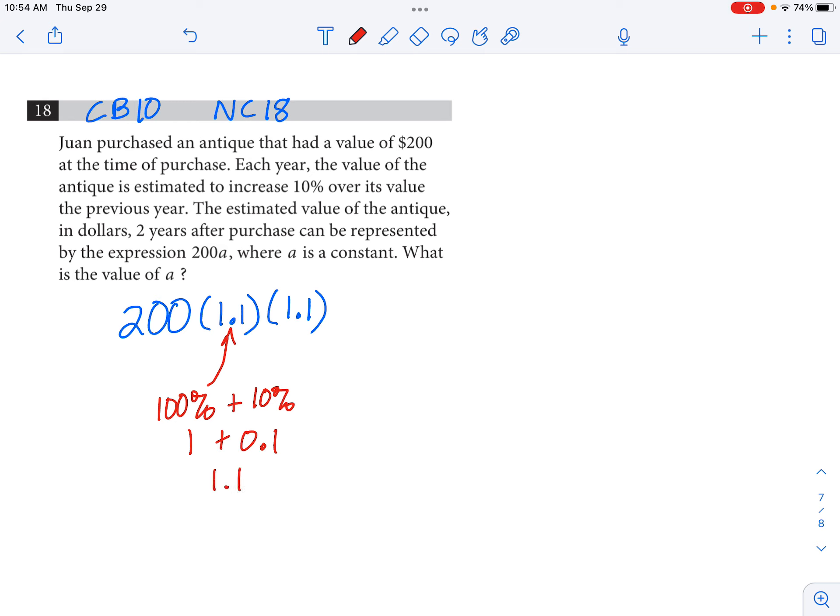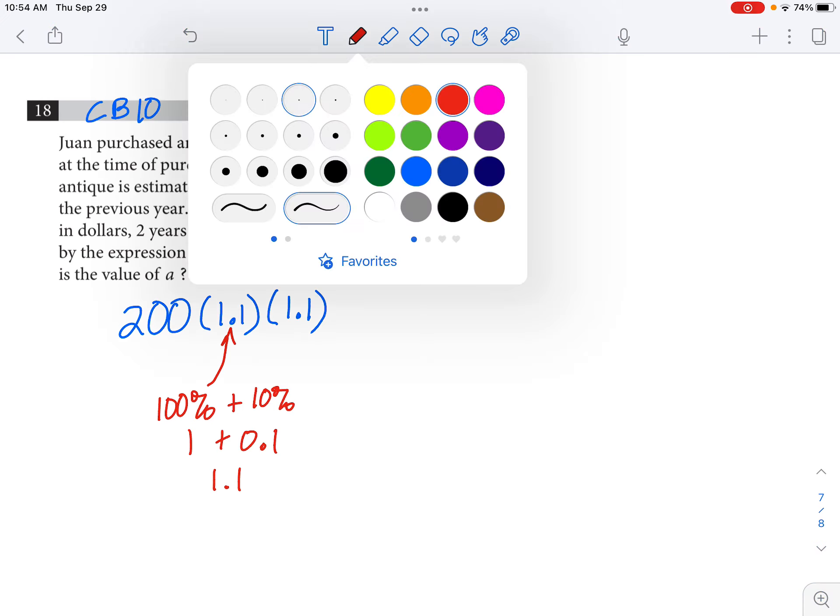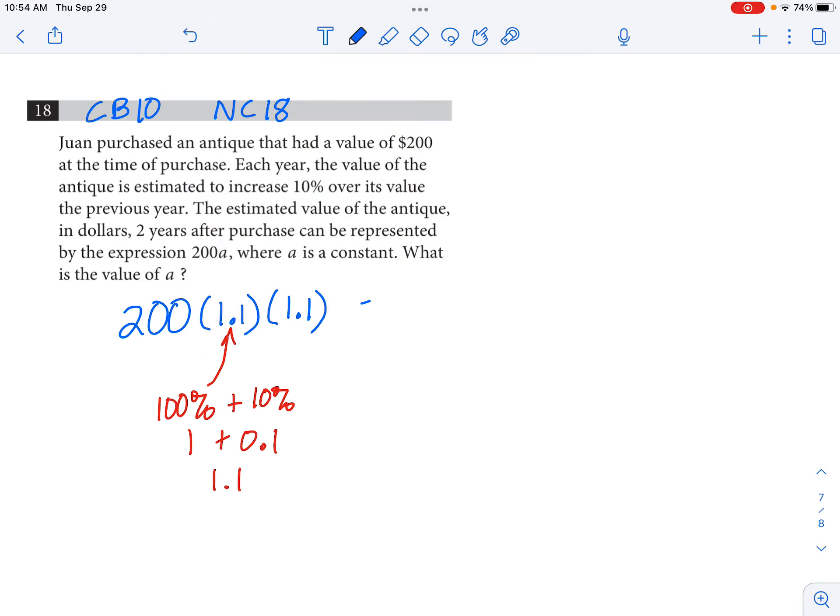So we could write 200 times 1.1 for the first year of appreciation, times 1.1 for the second year of appreciation. They say that that's going to equal 200 times a, and we're supposed to find the value of a.